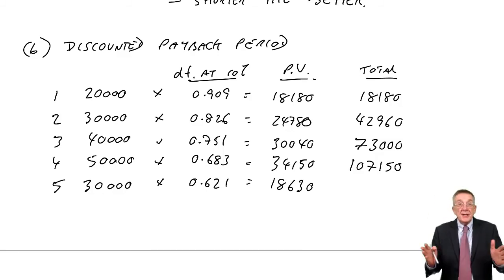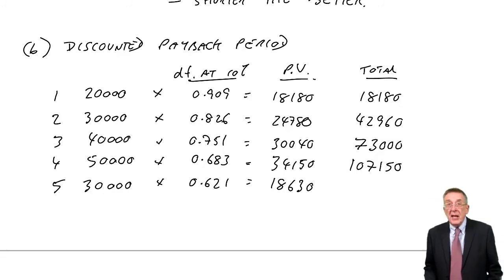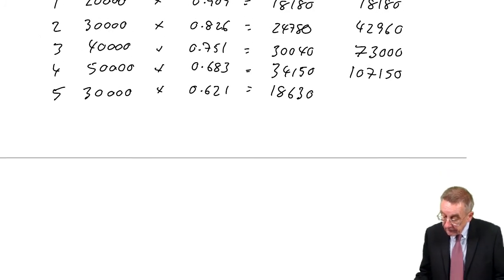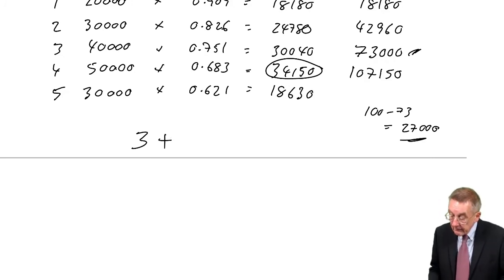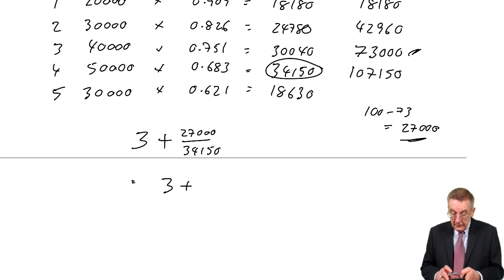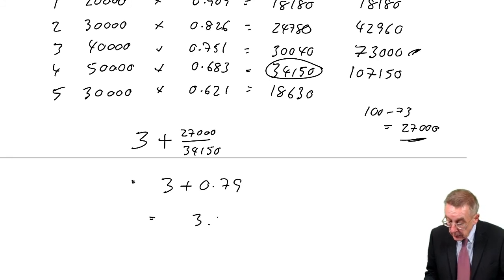But again, assuming money's received evenly, it's a little bit less than four years, because we only needed 100. It's three years, and we've got 73. And to get 100, we need an extra 27,000. The fourth year gave us 34,150. So if we assume it's spread evenly, it's going to be a fraction of the fourth year, 27,000 out of 34,150, which is 0.79, which gives us 3.79 years.